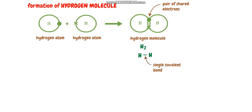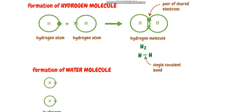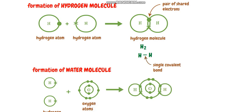Another example of covalent bond formation is the formation of a water molecule. In a water molecule there are two hydrogen atoms and one oxygen atom. Oxygen contains six valence electrons and hydrogen contains one valence electron. There is sharing of a single pair of electrons between oxygen and each hydrogen atom, forming a single covalent bond denoted by a dash: H–O–H. This is the formation of the water molecule.